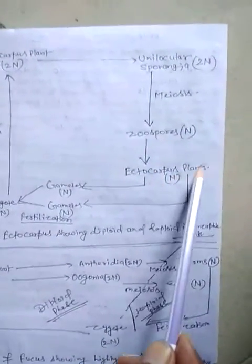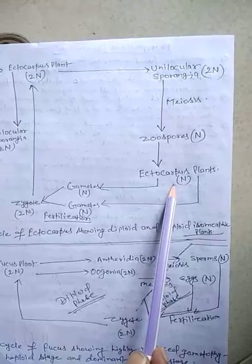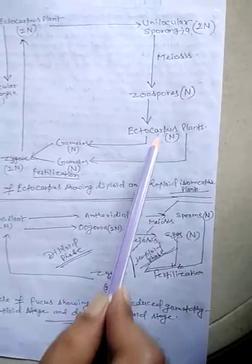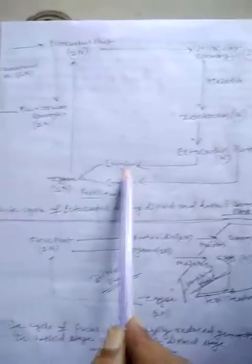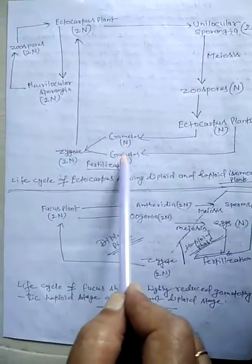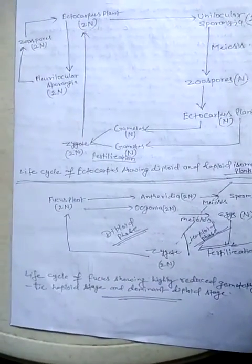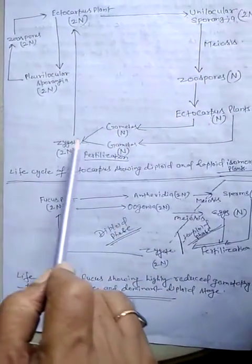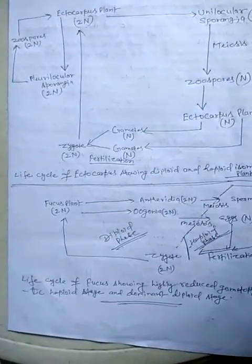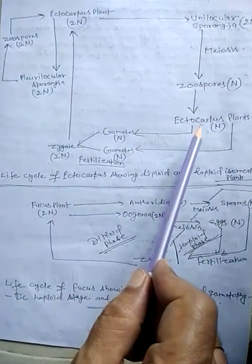This zoospore develops to form a haploid Ectocarpus plant. There are thus two types of plants: diploid and haploid. The haploid Ectocarpus plant produces male and female gametes, which fuse to form a diploid zygote, and this diploid zygote develops into the diploid plant. This is the life cycle of Ectocarpus showing diploid and haploid isomorphic plants — both similar in shape and size.